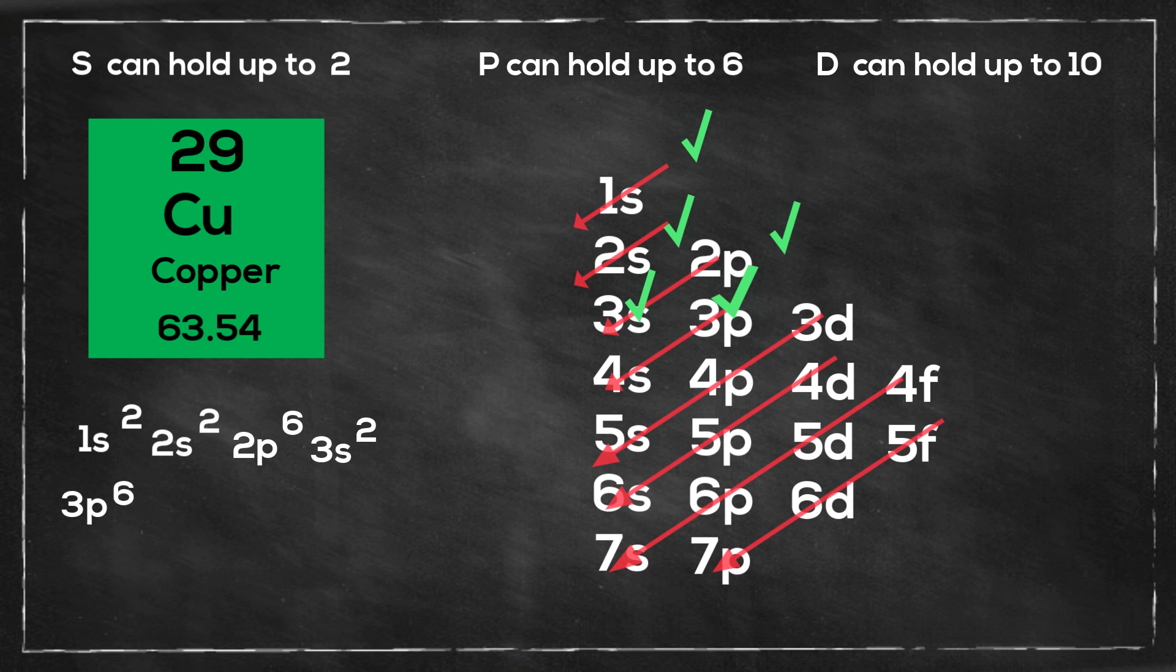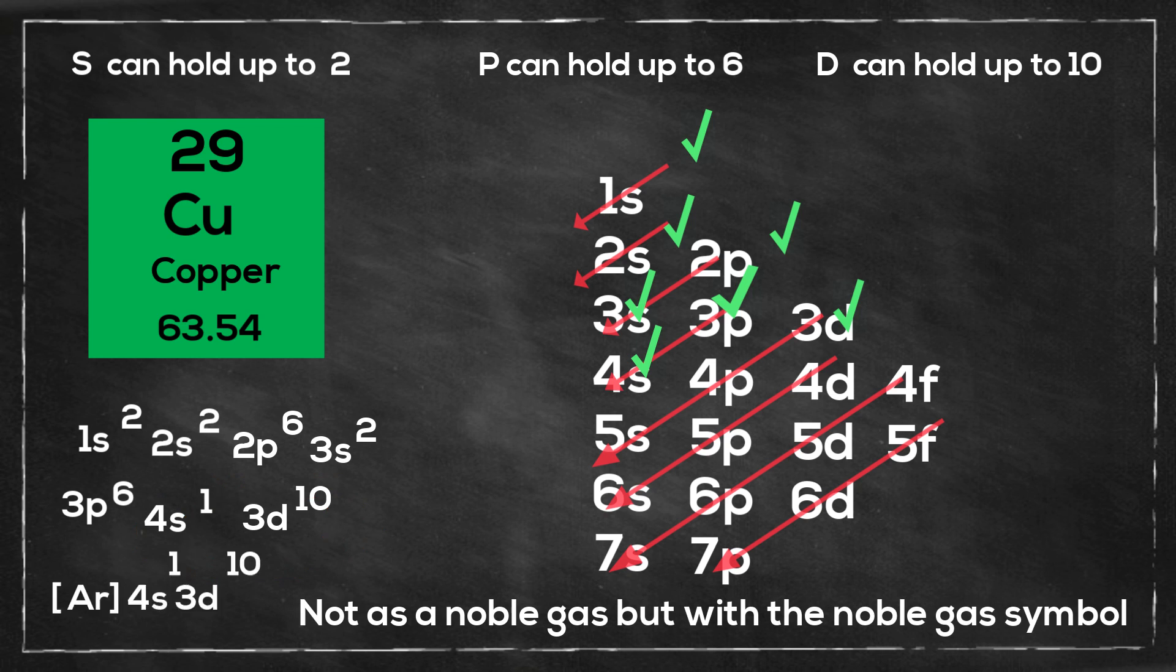And then you would normally go 4s2 and that would leave you 9 electrons left so it would be 3d9. But instead copper prefers and is more stable if you have 4s1 and then 3d10. And here it is written as a noble gas.